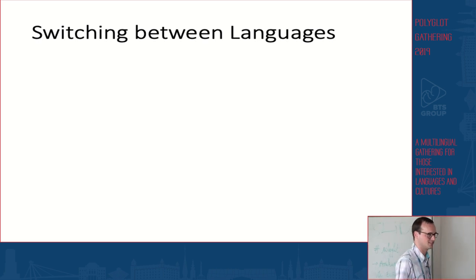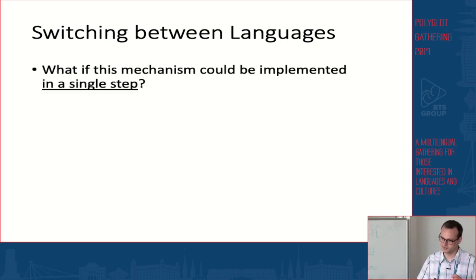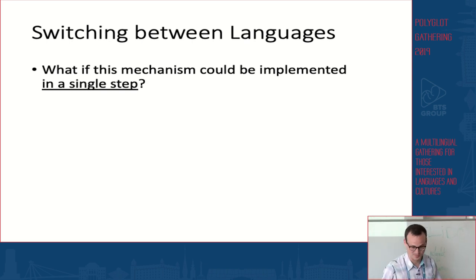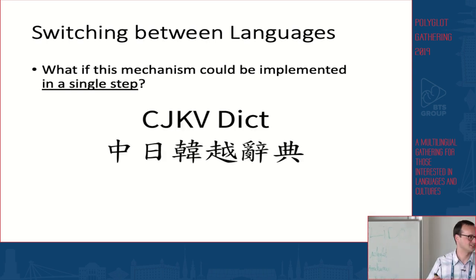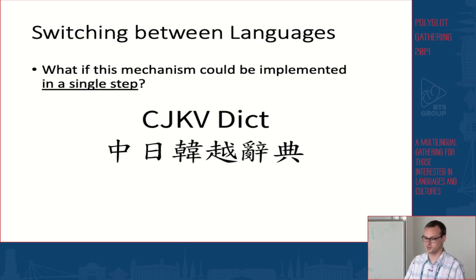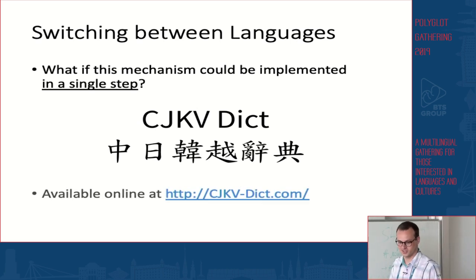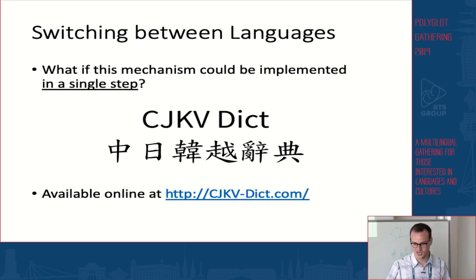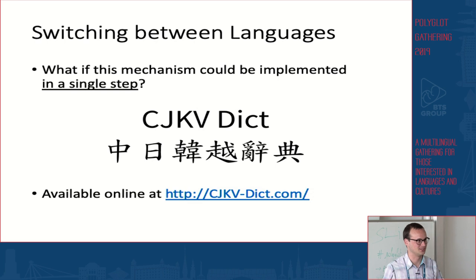So I thought to myself: what if this language switching mechanism could be implemented in a single step — a single click? And this is when I got the idea for CJKVDICT. CJKVDICT is basically an online tool available at cjkv-dict.com. It's completely free, anyone can use it, and I'll now guide you through all of its features.